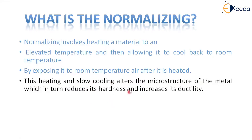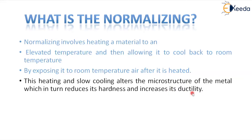Even though the hardness — that means the strength of the material — reduces a little bit, the main property required for molding, forging, and extrusion is ductility. The increase of this ductility property can be achieved by utilizing the normalizing process.